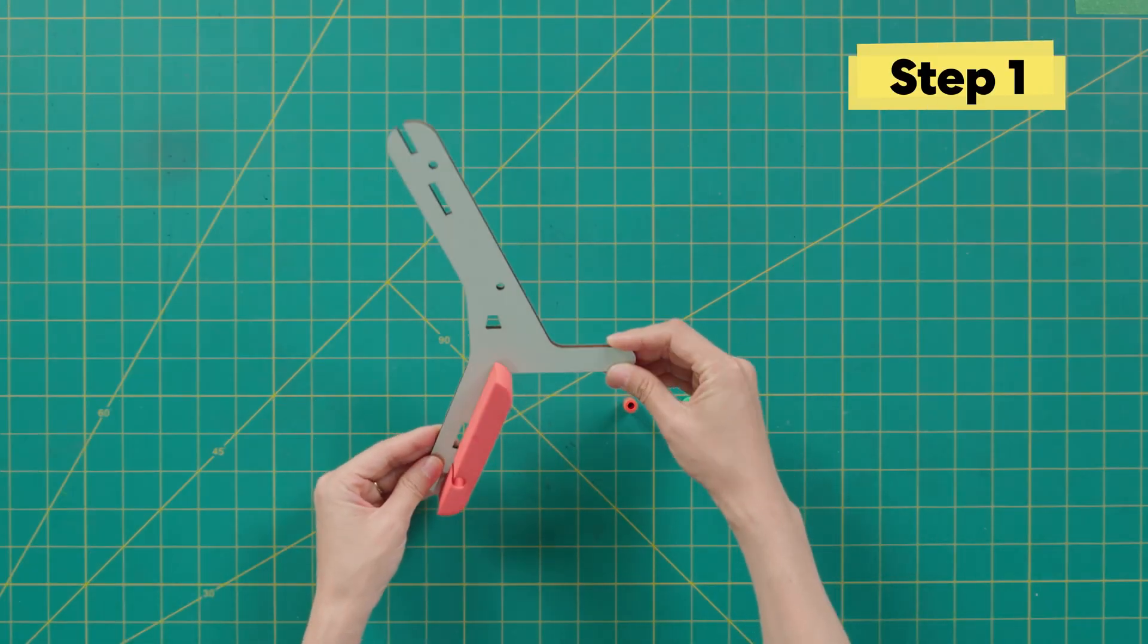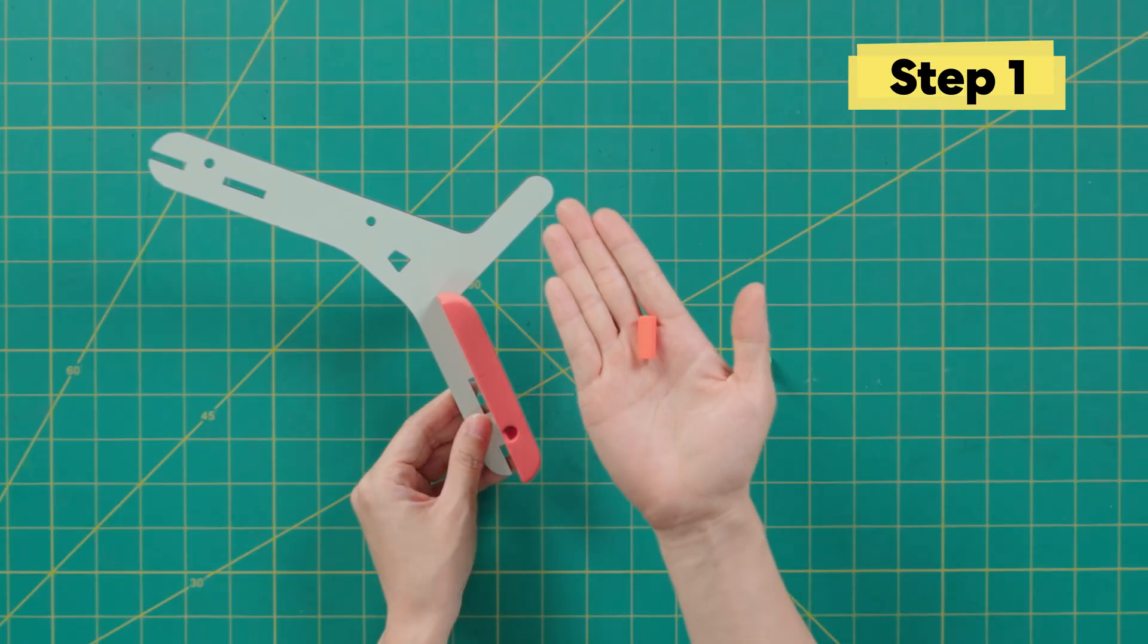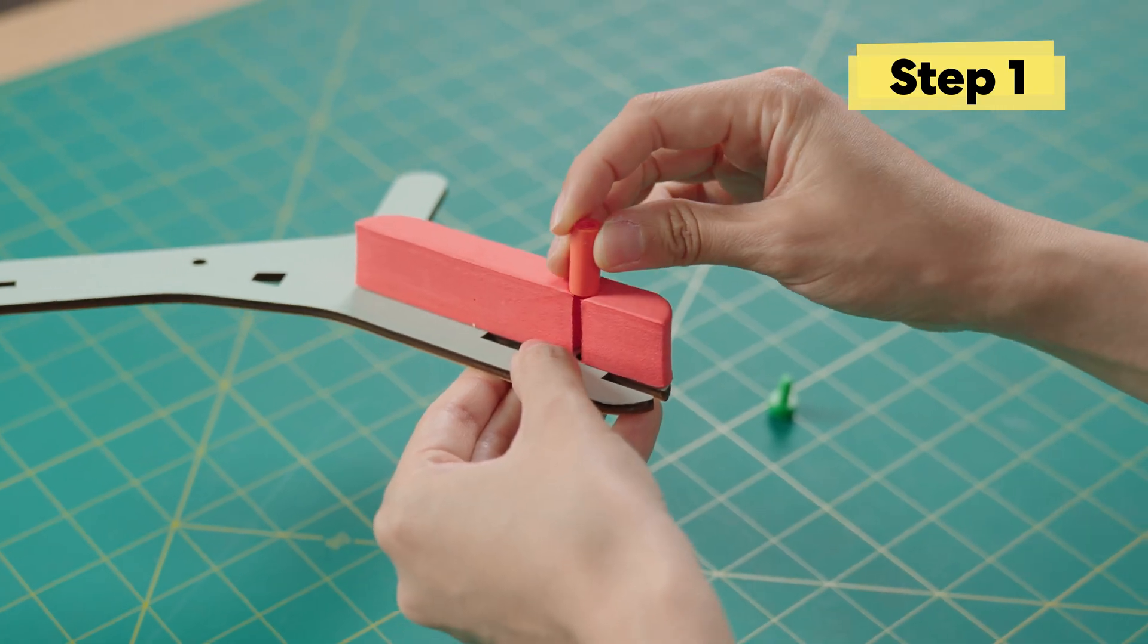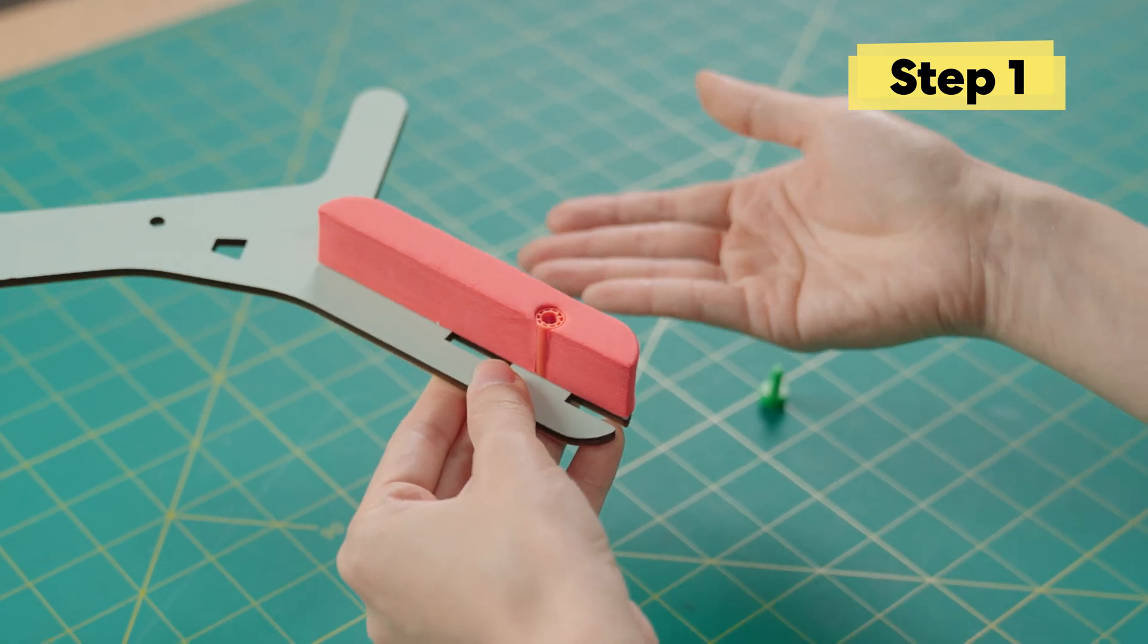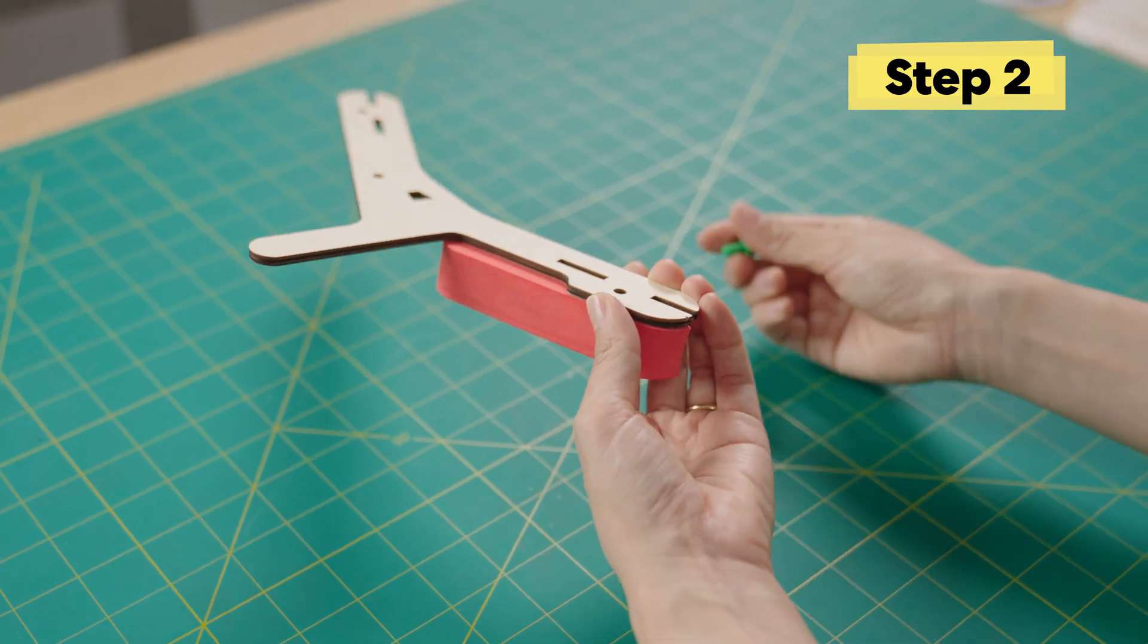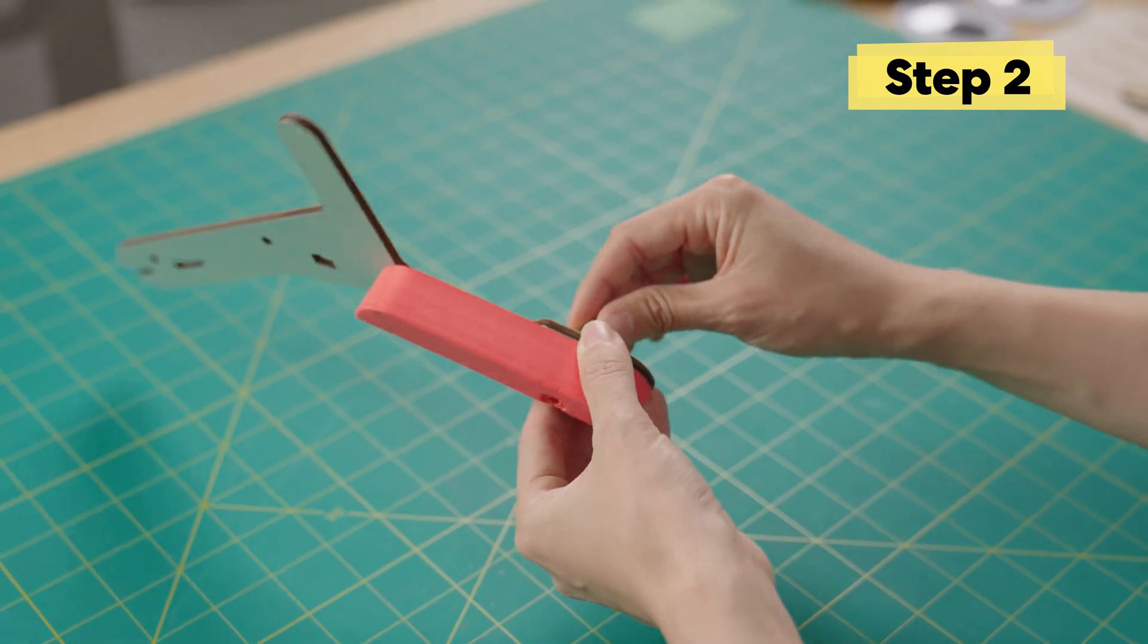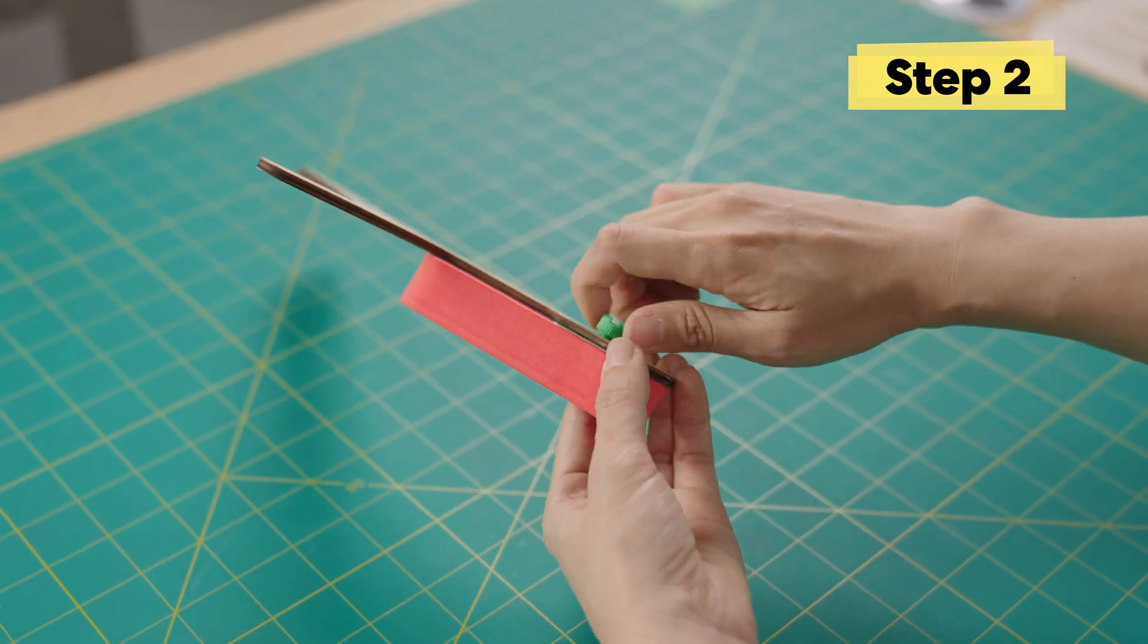First step, let's take the bow grip with the reddish foam on it and this spacer. We're going to insert it into this little hole. Slide it in. Next, we're going to take this green bolt and flip over the bow grip. Now the green bolt goes into this hole, which is opposite the spacer. We're going to hand tighten it in.